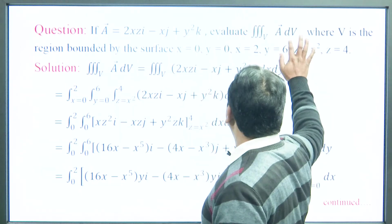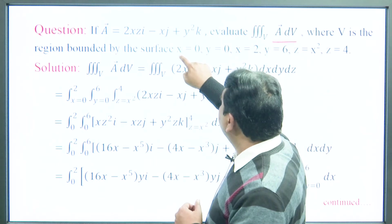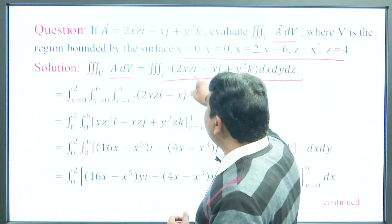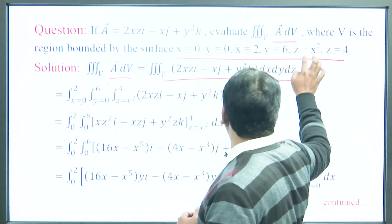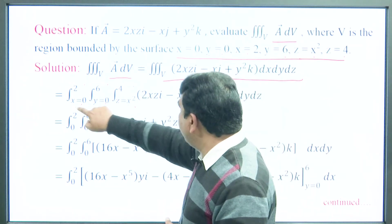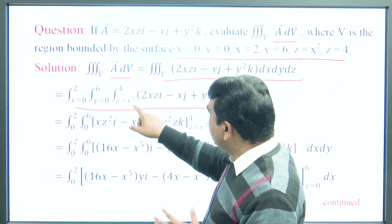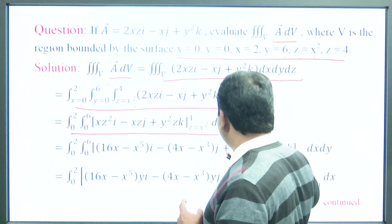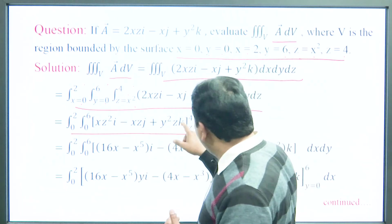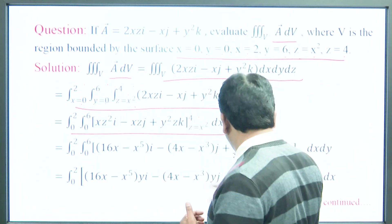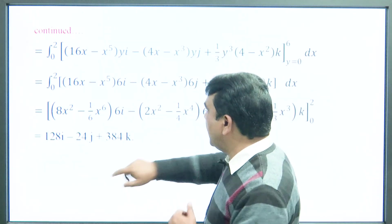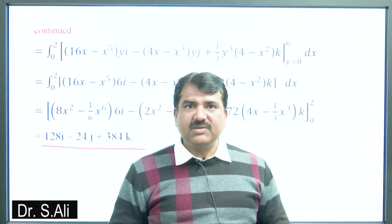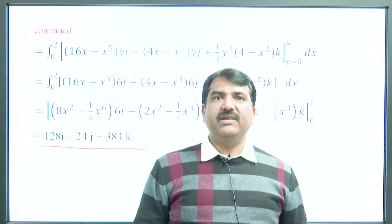For the volume integral example: the triple integral of A dV, where x ranges from 0 to 2, y from 0 to 6, and z from x² to 4. We first integrate with respect to z (since z limits depend on x), then with respect to y, then with respect to x, and after evaluation we obtain the final result for the volume integral of the given vector function.